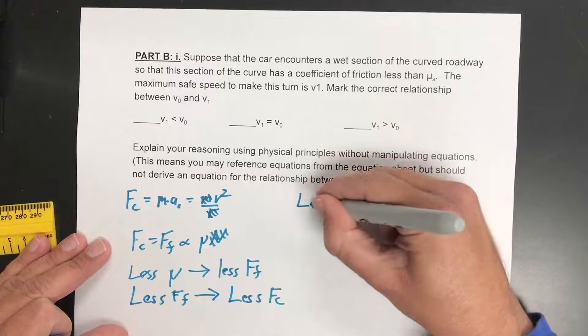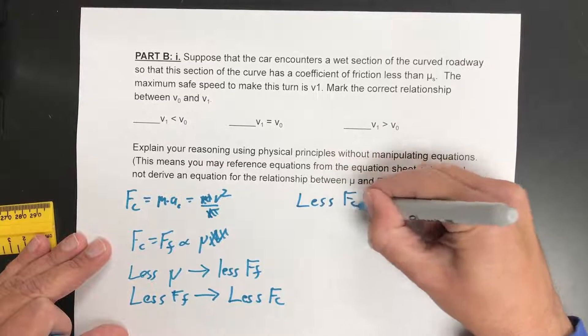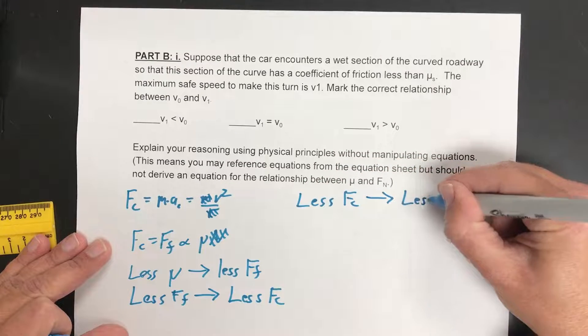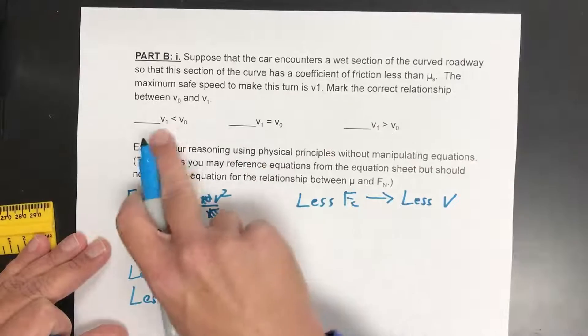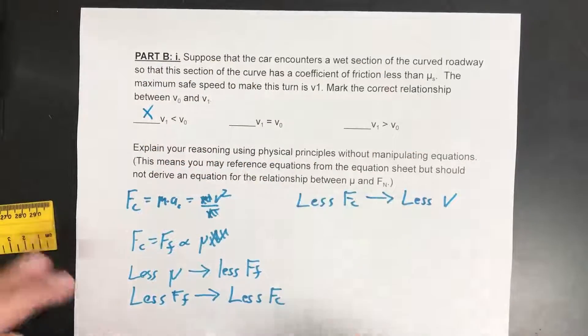Less force of friction leads to less centripetal force. So if we have less centripetal force we can't go as much in a circle as we normally would. So less centripetal force means less velocity. The radius is fixed so less centripetal force leads to less velocity. So v1's got to be less than v0.